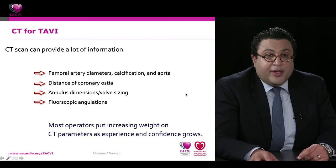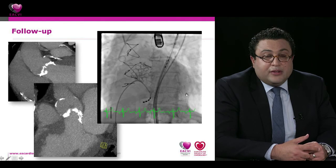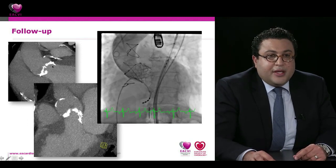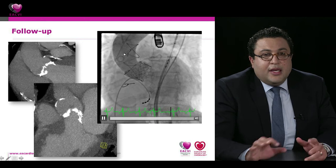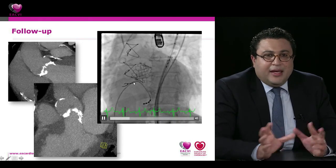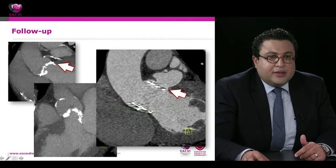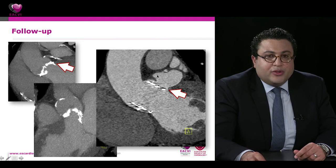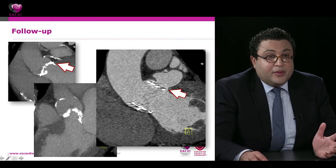CT is also useful in TAVI follow-up. One case demonstrated a patient with heavy annular calcium extending into myocardium who had brief hemodynamic compromise during implantation. Post-implant CT performed months later revealed a concealed annular rupture, with contrast tracked outside the annulus but contained — the patient survived. CT is ideal for showing such anatomy. TAVI leaflet thrombosis or hypoattenuation has also been increasingly reported. In a Japanese cohort of ~70 patients, hypoattenuating leaflet thickening was found in 1 patient at discharge, 6 at six months, and 3 at one year — mostly with no clinical events.